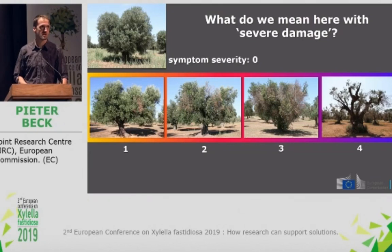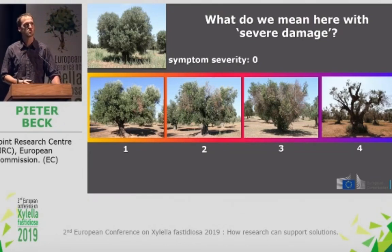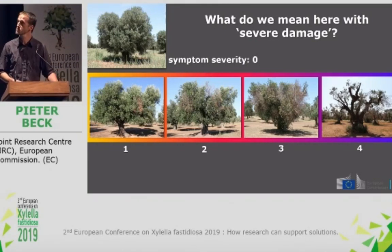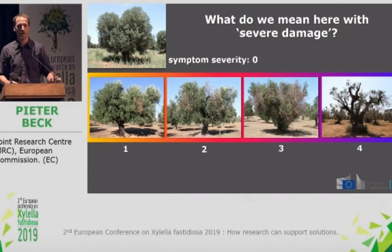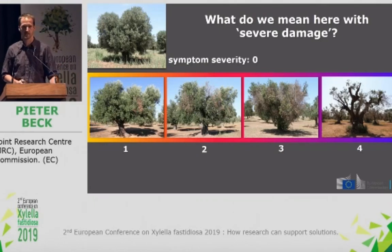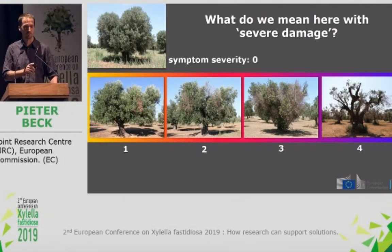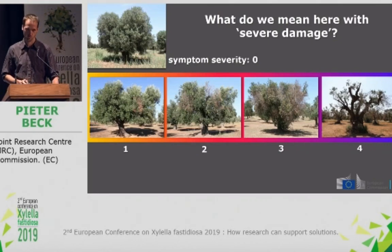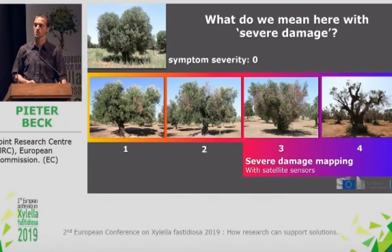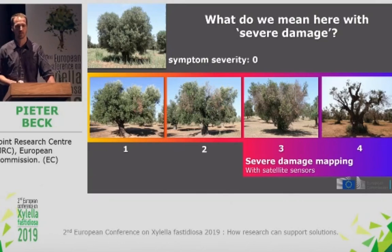What do we mean by severe damage? Here is a series of photos illustrating a damage scale from 0 in the top left, which is an entirely healthy-looking tree, to number 4, which is a tree without any live branches left. Steps 1, 2, and 3 are the transition from 0 to 4. When we talk about severe damage as we define it here, we focus on levels 3 and 4 — very conspicuous damage at the level of individual trees.